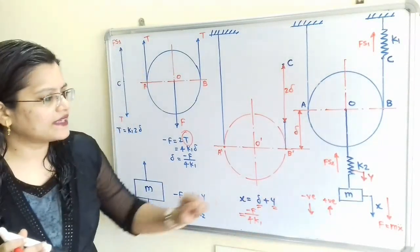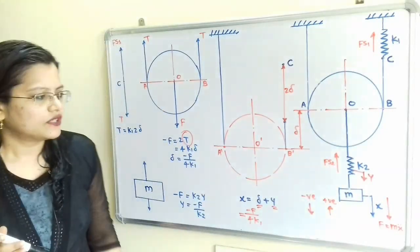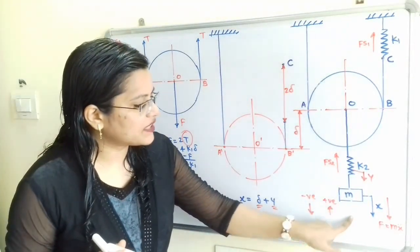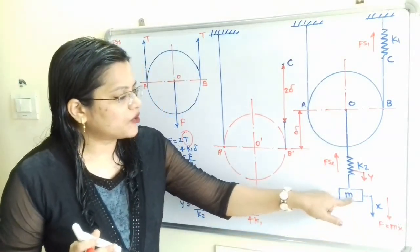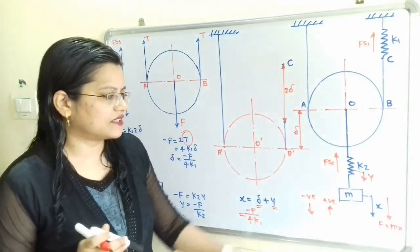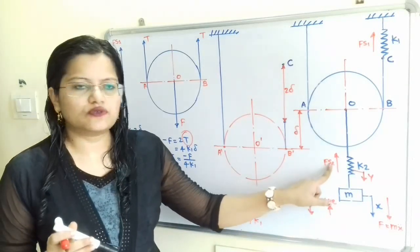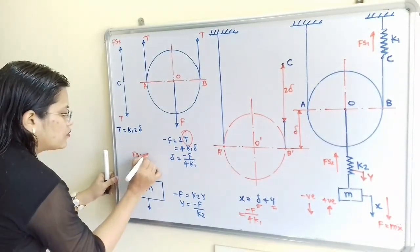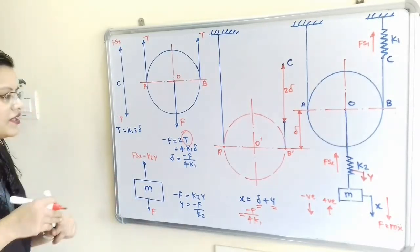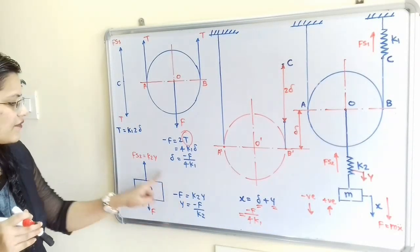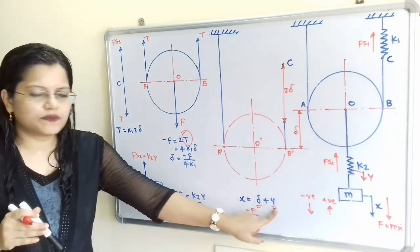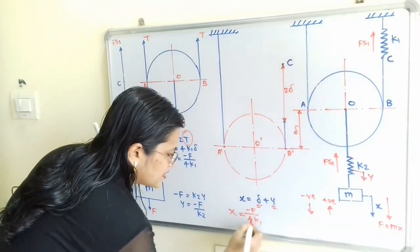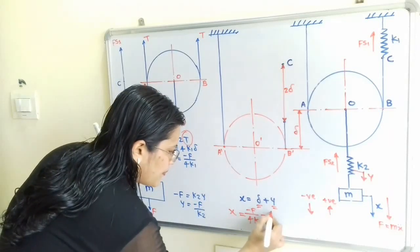In the same way we will replace Y. Y is the displacement of spring K2. From the free body diagram of mass M, force F acts downward and the spring force FS2 acts upward: FS2 is equal to K2 into Y. For the downward direction, minus F is equal to K2 into Y, so Y equals minus F divided by K2. Therefore X equals minus F divided by 4K1, minus F divided by K2.